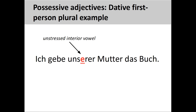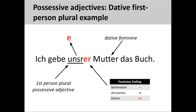The first and second person plural adjectives present us with some difficulties, as they both contain an unstressed interior vowel. For example, in the sentence 'Ich gebe unserer Mutter das Buch' — I give the book to our mother — it is difficult to pronounce the interior -e- in the root when the dative feminine ending -er is added on. It is not uncommon, therefore, to drop this interior -e- when the first and second person plural adjectives add an ending: 'Ich gebe unsrer Mutter das Buch.' This is much easier to pronounce.